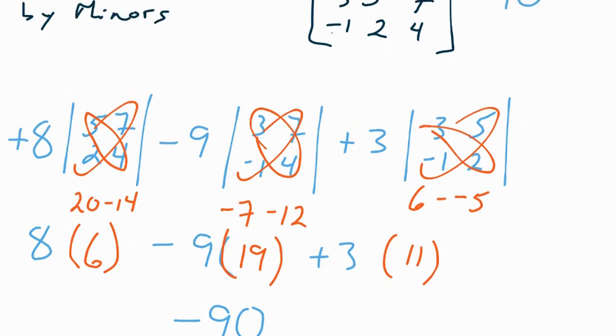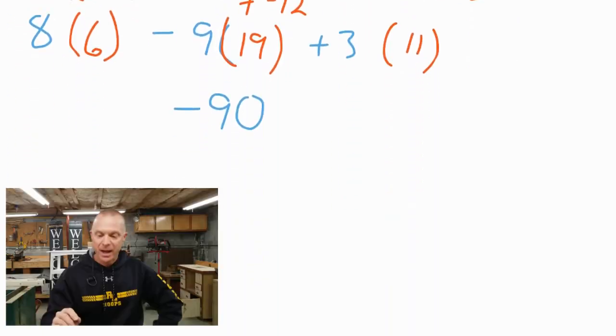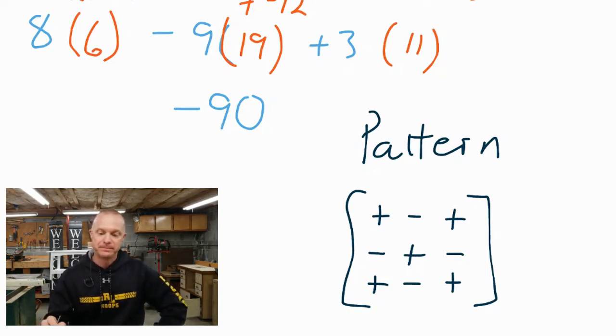It's called an expansion by minors. We went across the first row. If you're already wondering, could you have gone across any row? Yes. Or any column? Yes. You can actually expand any row or column. Before we do that, I want to add one more thing. There's always a pattern. Whenever you have a 3x3 matrix, you can always be assured that no matter which row or column you expand, that the first, second and third number will be a plus minus plus. The next one would be a minus plus minus. And then the last row goes back to plus minus plus. So if I expanded with any row or any column, I would choose these plus and minus signs in front of each of the coefficients.